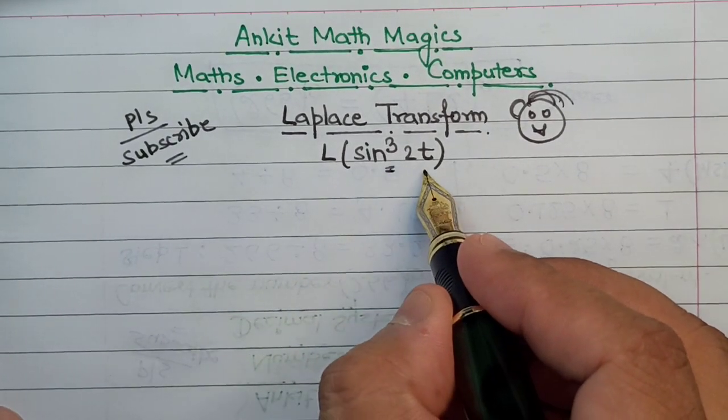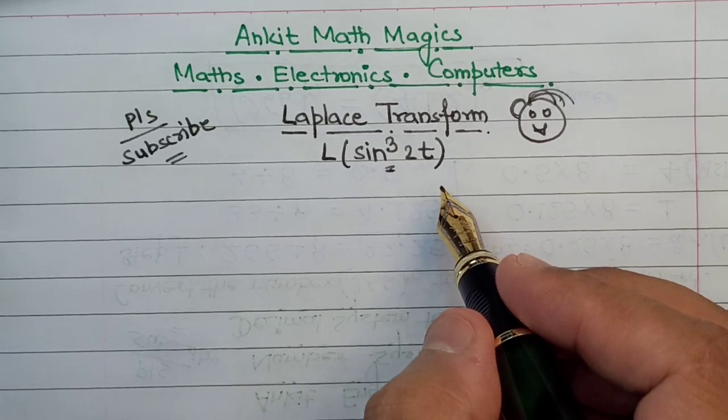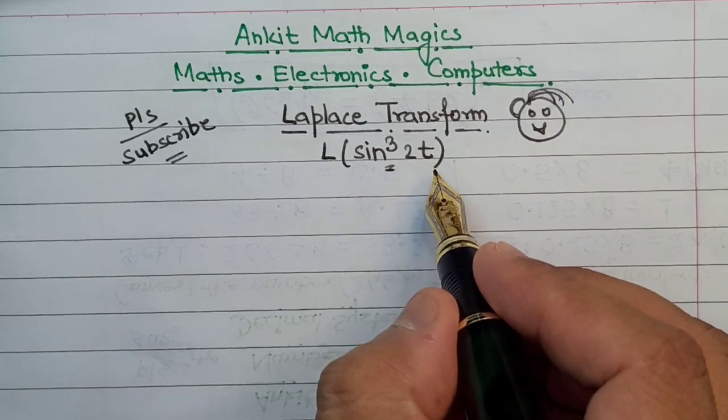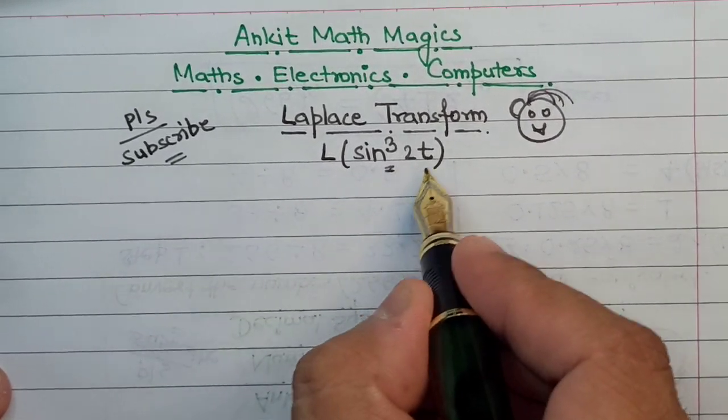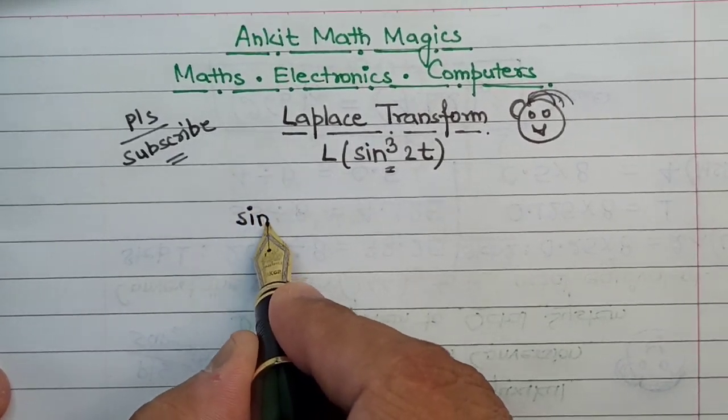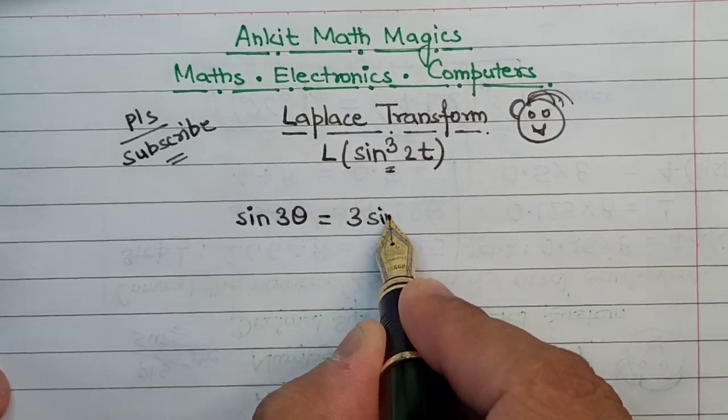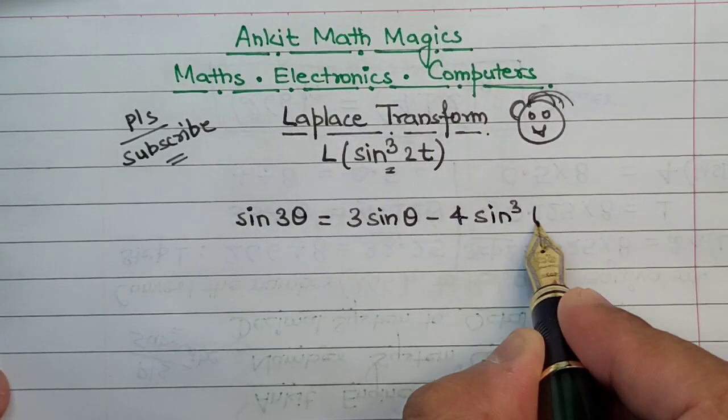We will start focusing on this part here. Here we have sine cube of 2t. We will be taking the help from trigonometric formulas that you have learned in the earlier classes to resolve this part into two or more simpler functions. Now the formula where sine cube theta arrives is of sine 3 theta. The formula for sine 3 theta is 3 sine theta minus 4 sine cube theta.